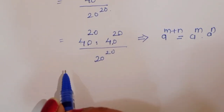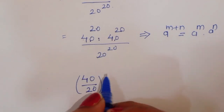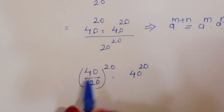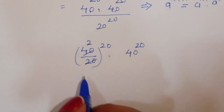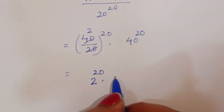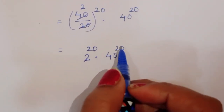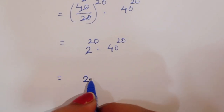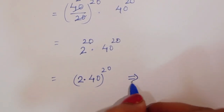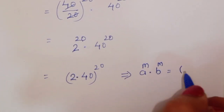Now we can take 40 divided by 20 as common, raised to power 20, times 40 power 20. Since 40 divided by 20 equals 2, we get 2 power 20 times 40 power 20. Because the power is the same, we can apply the formula: a power m times b power m equals (ab) power m, giving us 2 times 40, all to the power 20.